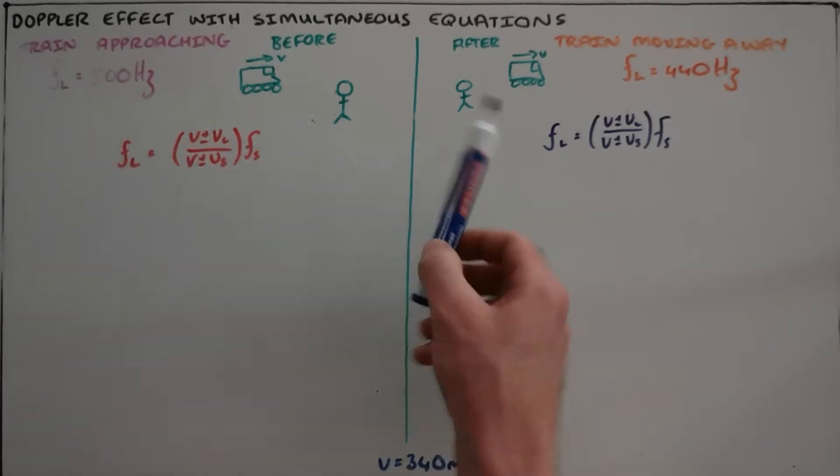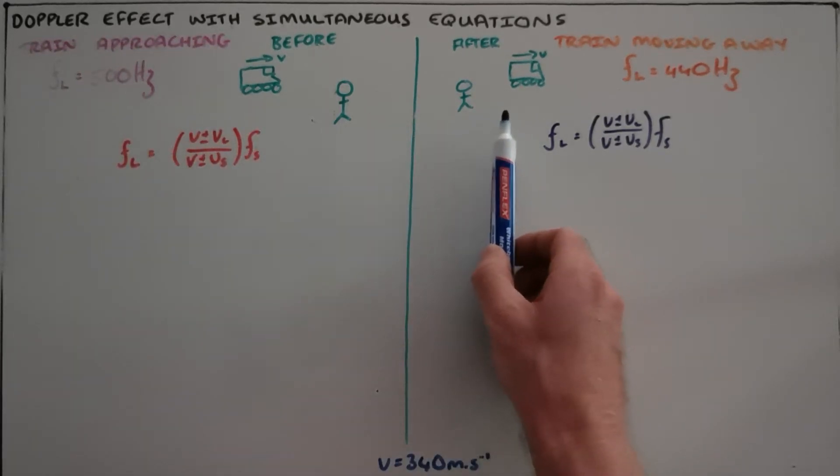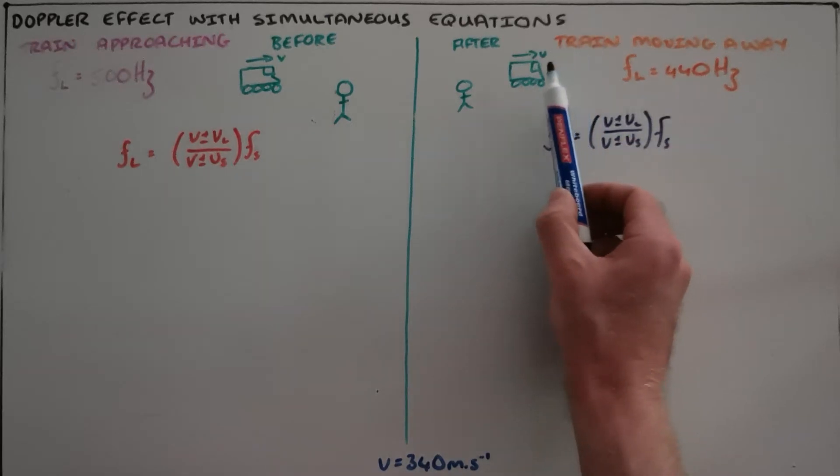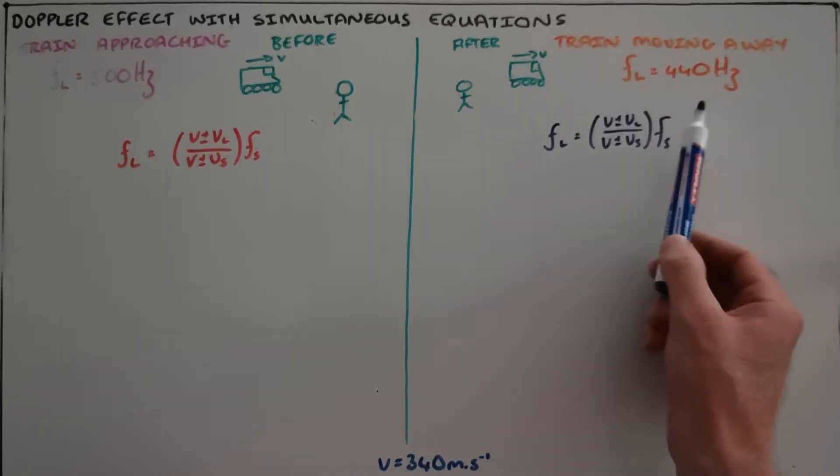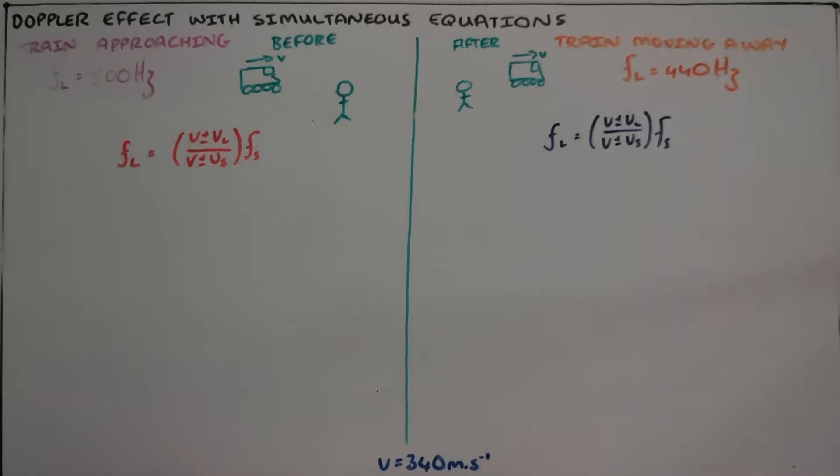The train then continues and passes that observer, and as it's moving away at that same speed V, the observer then observes a frequency of 440 Hertz.